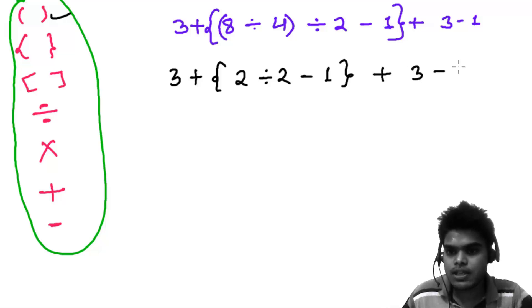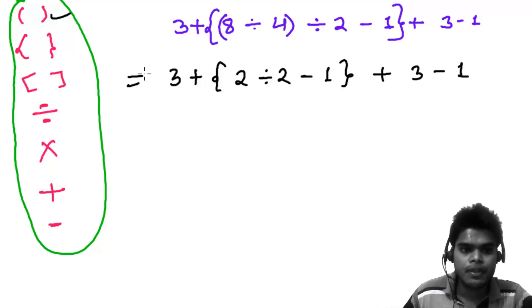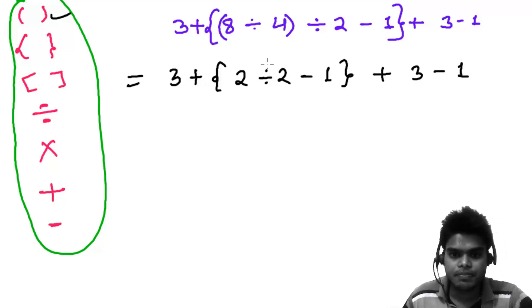Now we have this bracket solved. After that, we need to solve the braces. To solve the braces, there are steps. Inside that, we need to choose two operations: division and subtraction. Division always comes first. 2 divided by 2 is 1. So 3 plus 1 minus 1, plus 3 minus 1.